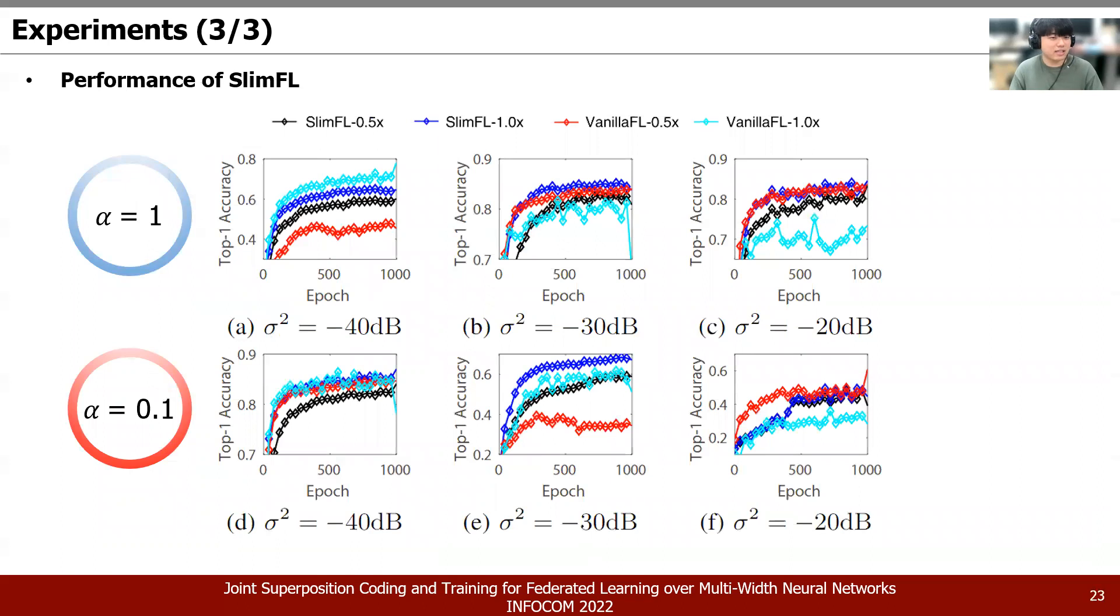And we confirm the robustness of SlimFL's non-IID data through experiments. The graph shows the top-1 accuracy graphs when half width and full width of SlimFL and vanilla FL are placed in each communication situation respectively. Also, in the first row of graphs, we use alpha equals 1, representing data set distribution is on IID environment. And in the graphs below, we use alpha equals 0.1 as the data set distribution is on the severe non-IID data set. At SlimFL, 0.5x SlimFL shows a stable convergence under the conditions of alpha. On the other hand, vanilla FL showed unstable convergence as communication situation worsened.